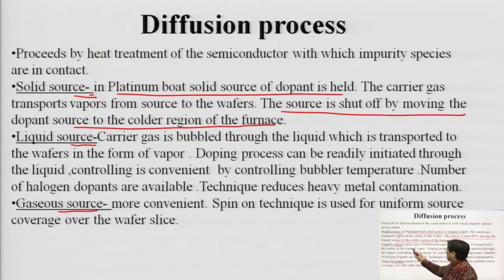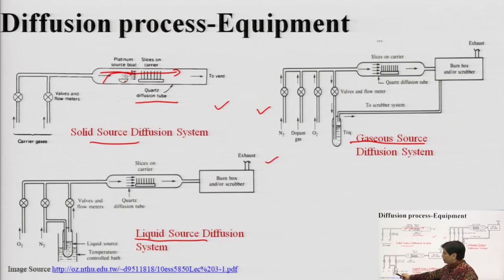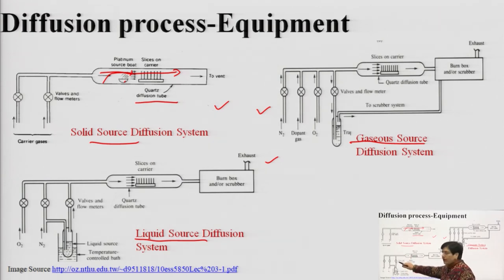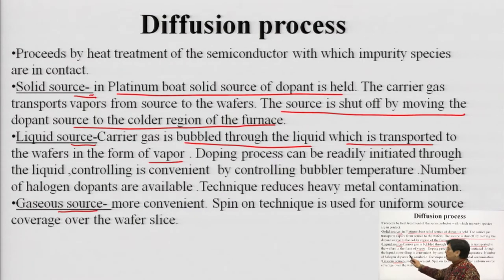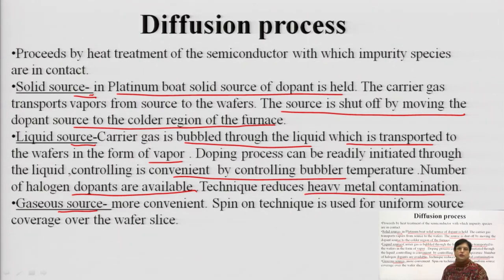In the case of a liquid source, a carrier gas is bubbled through the liquid and transported to the wafers in the form of vapor. Along with the carrier gas, the liquid source is converted into vapor. You can control the flow using valves and conveniently control the flow through the bubbler. You can control the temperature and make use of halogen dopants, which control the impurities. This technique reduces heavy metal contamination because you are able to use halogen dopants.